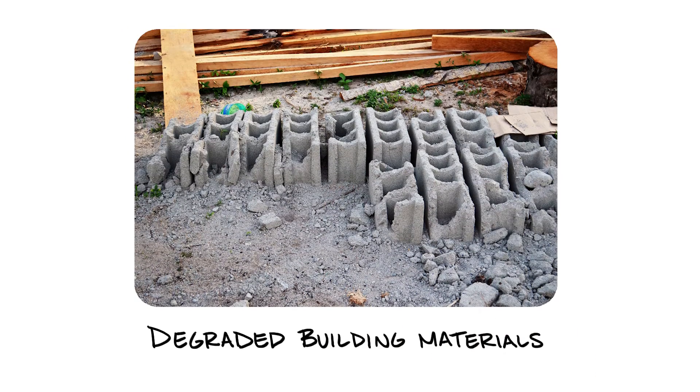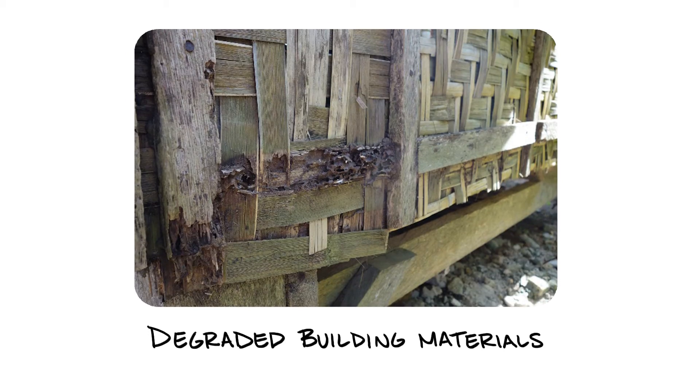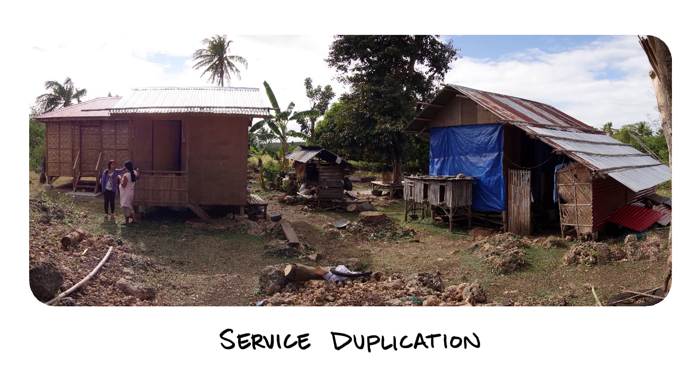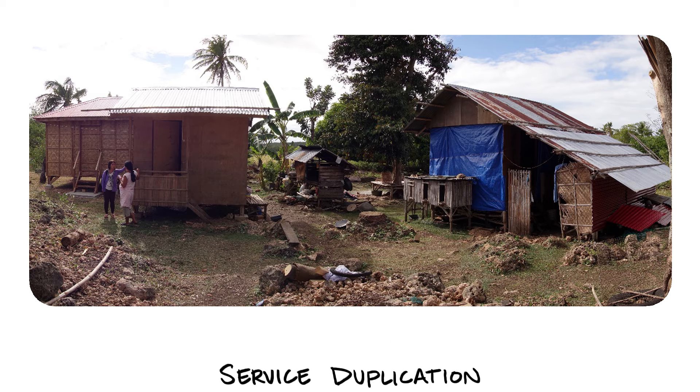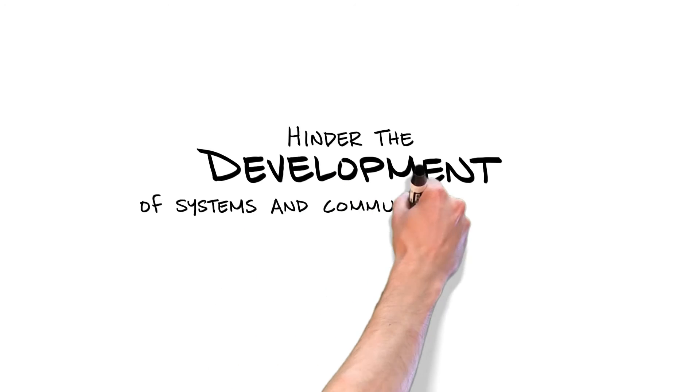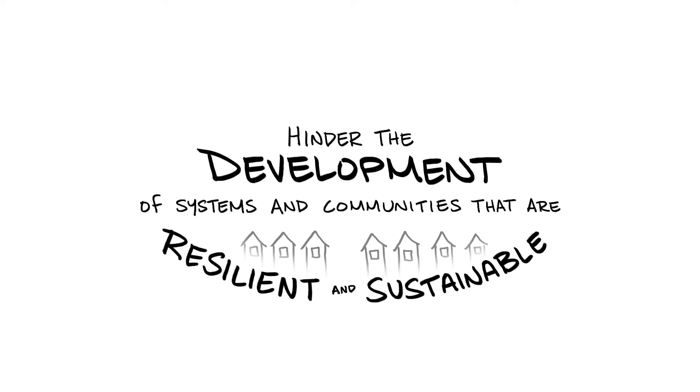Degraded building materials, where supplies were used that were inadequate for local conditions. And service duplication, where multiple houses were built for the same family, but by different relief agencies. All these problems hinder the development of systems and communities that are resilient and sustainable. So how do we overcome these problems for disaster reconstruction work?